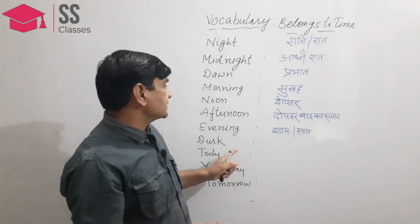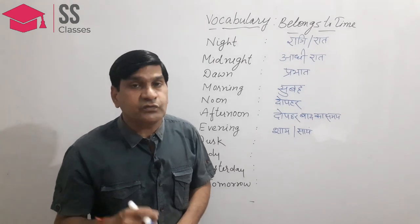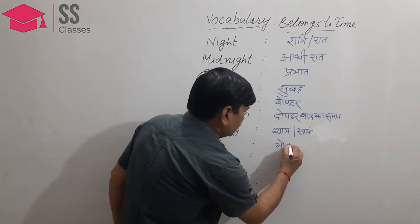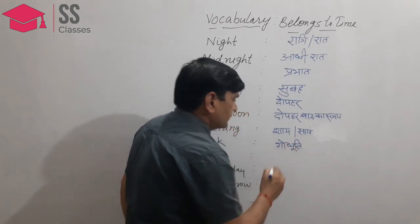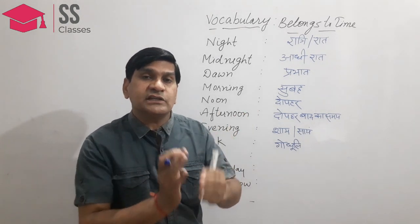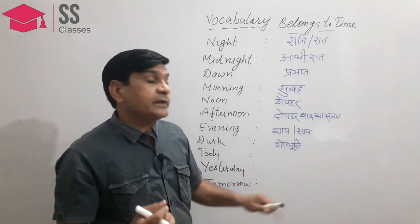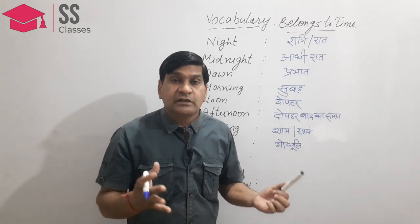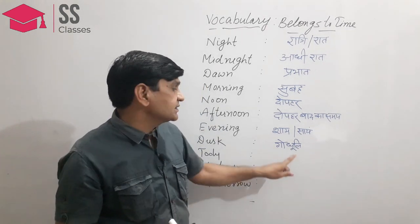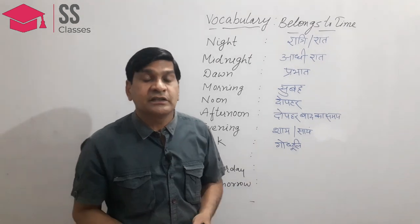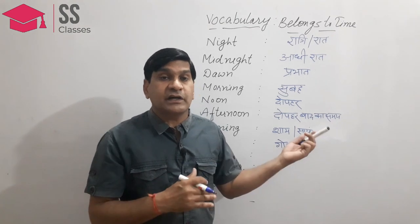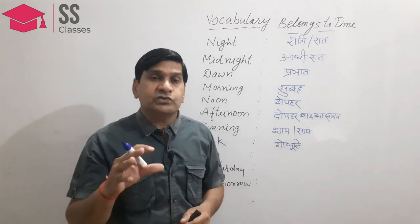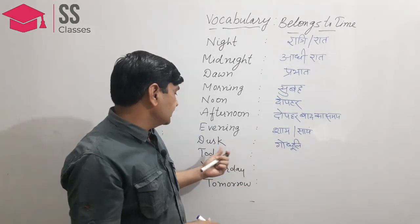Dusk — in the same way, it is just the opposite of dawn. Dusk is the time just after evening — that is called dusk. In Hindi, we say gaudhuli — gaudhuli ka samay. It is the time between evening and night. In English, we call it dusk.